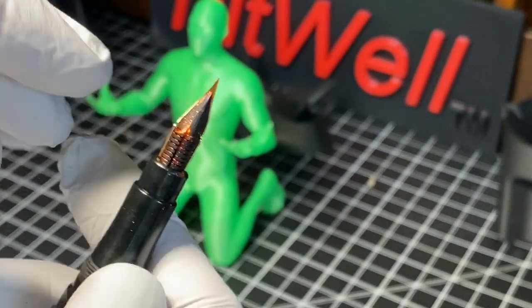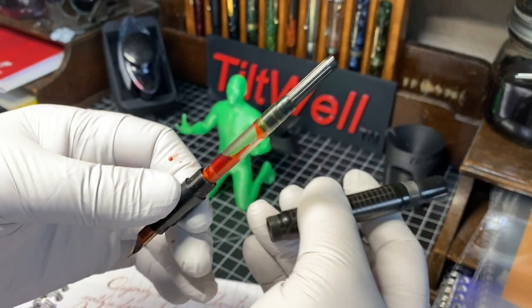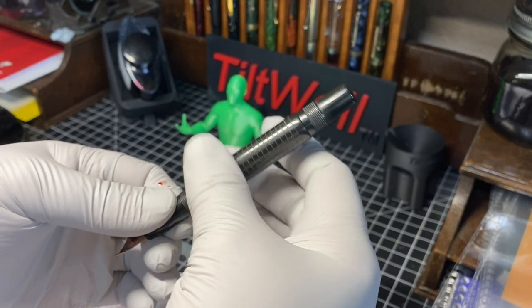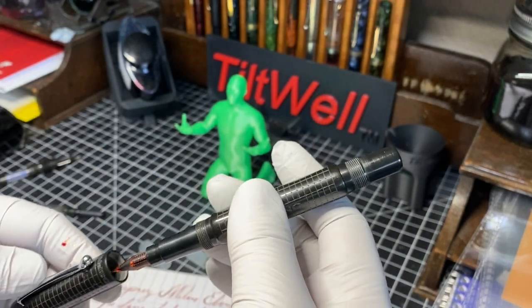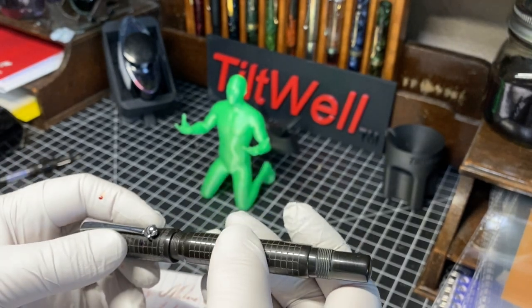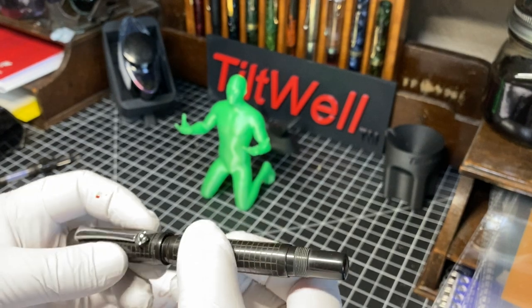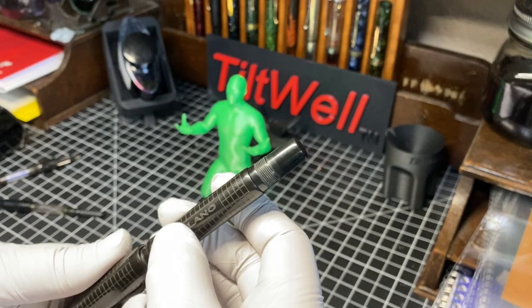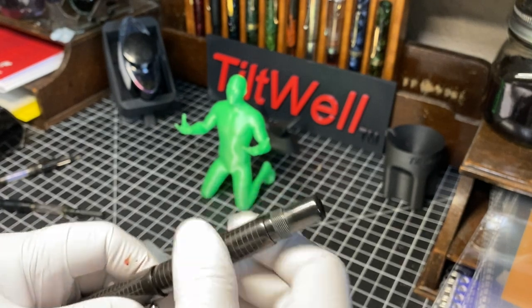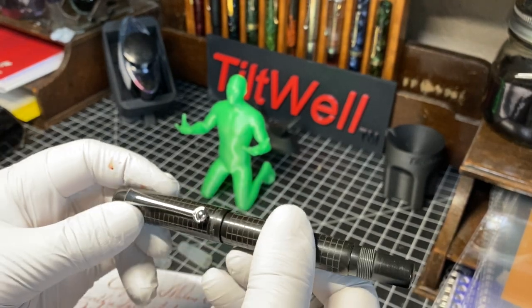Again, I'm pretty sure this is an ebonite feed in here. Inside. Got the converter. Isn't that pretty ink? One thing that I didn't particularly like is that the threads on this thing aren't cut as well as they should be. You have to fiddle a little bit or you end up stripping them. There.